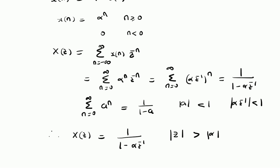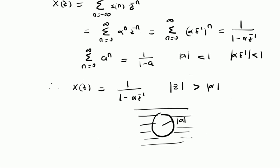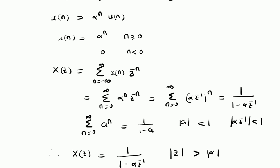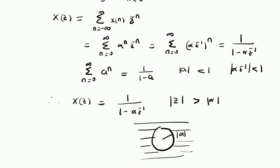The ROC of this Z-transform is the entire z-plane outside the circle of radius |α|, that is, the radius of the circle equals |α|. To summarize: for a causal signal x(n) = α^n · u(n), the corresponding Z-transform is 1/(1 − α·z^(−1)) and the ROC is the whole z-plane outside the circle of radius |α|. Thanks for watching.